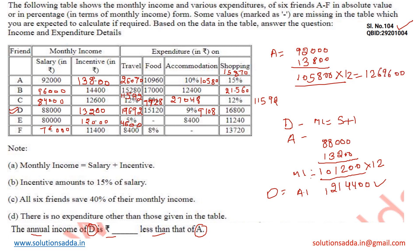By subtracting the annual income of D from the annual income of A, we get our answer. The remaining balance is 55,200. So 55,200 is the answer to this question.